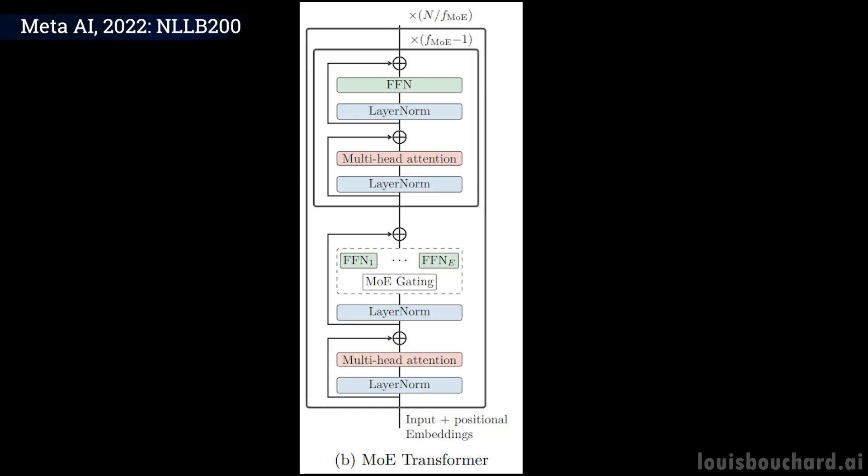They use Sparsely Gated Mixture of Experts models to achieve a more optimal tradeoff between cross-lingual transfer and interference and improve performance for low-resource languages. Sparsely Gated Mixture of Experts are basically regular models but only activate a subset of the parameters per input, instead of involving most if not all parameters every time. You can easily see how this is the perfect kind of model for this application.